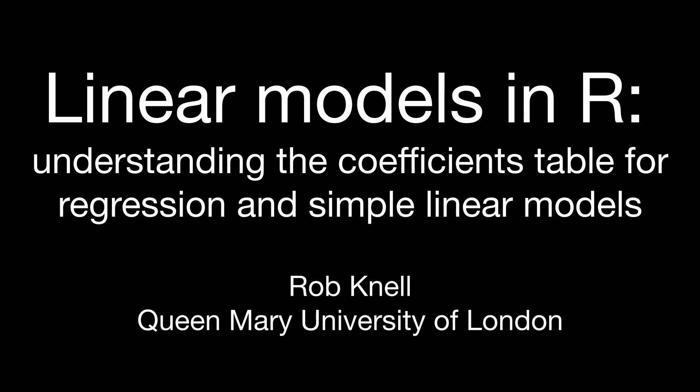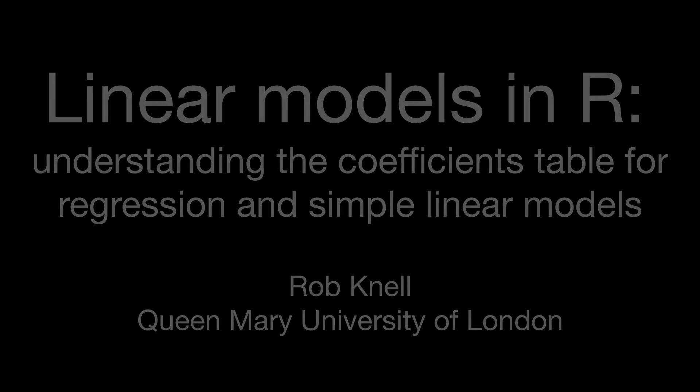What we're going to do here is look at how we can extract the coefficients of some regressions from the coefficients table produced by the summary function in R, which is produced when we have a linear model. We're going to look at a straightforward simple linear regression and then a couple of linear models where we have more than one factor, so we have two different lines fitted to our data.